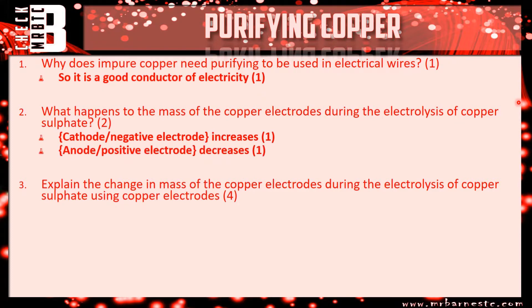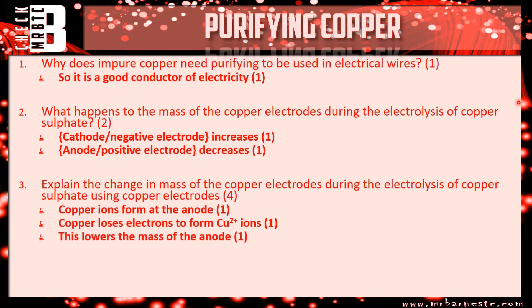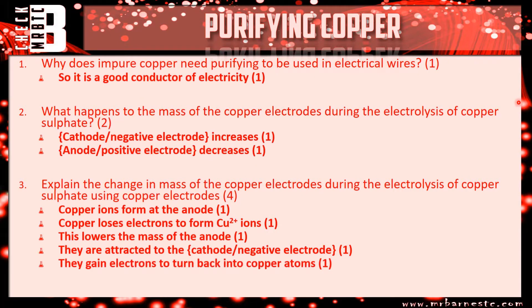Question three, this is the four marker, explain the change in mass of the copper electrodes during this electrolysis. So the first thing that happens is the copper ions form at the anode. They do that by losing electrons, turning to Cu2+. When they're in the solution, that lowers the mass of the anode. They will then move over, be attracted to the cathode, the negative electrode, and they'll gain electrons to turn back into copper atoms, which increases the mass of the cathode. So any four of those six points will get you four marks.